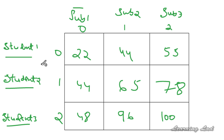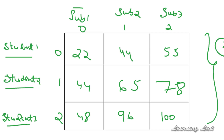Each row represents a student. If we have 2 rows, then we are storing the marks of 2 students. If we have 5 rows, then we are storing the marks of 5 students. The columns represent the subjects. If we have 3 columns, we store marks for 3 subjects; if we have 6 columns, then we store marks for 6 subjects.